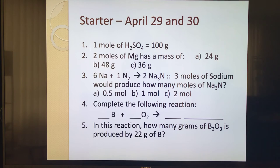Number three: I'm giving you a complete balanced reaction. Six moles of sodium plus one mole of nitrogen produces two moles of sodium nitride. That is a correct equation, fully balanced. Now what I want to ask you is kind of a recipe question: if I only use three moles of sodium, how much sodium nitride would I produce? Half a mole, one mole, or two moles?